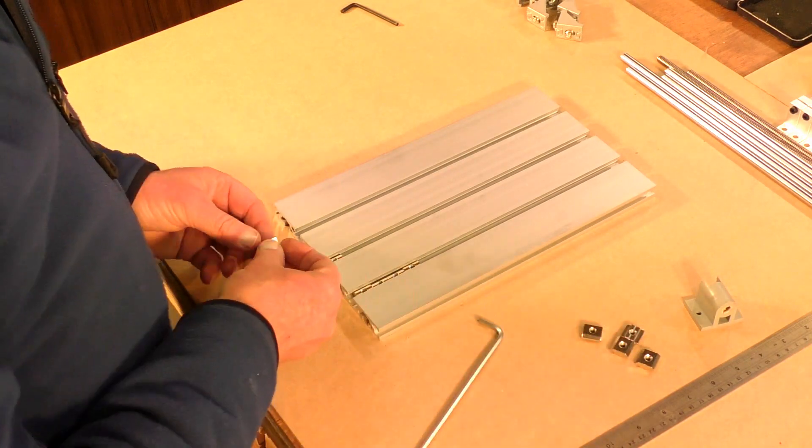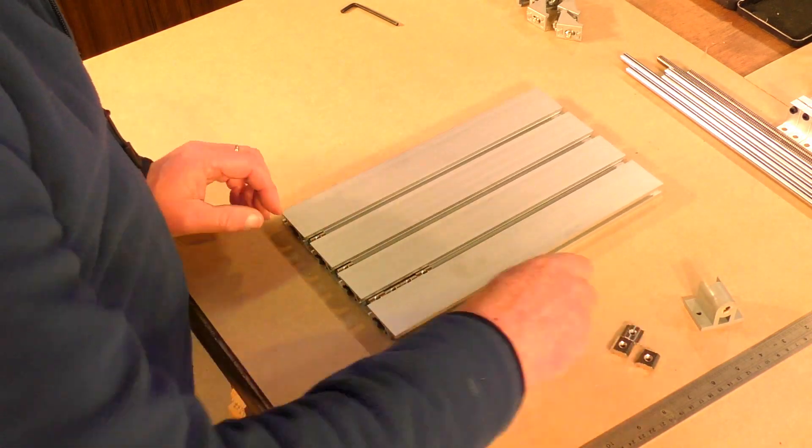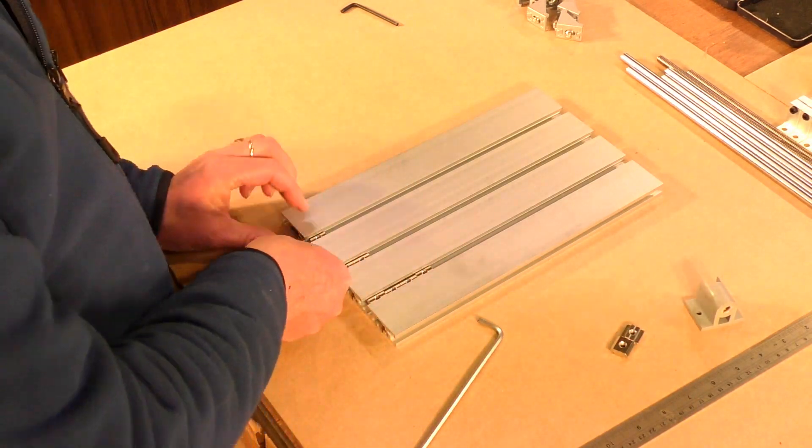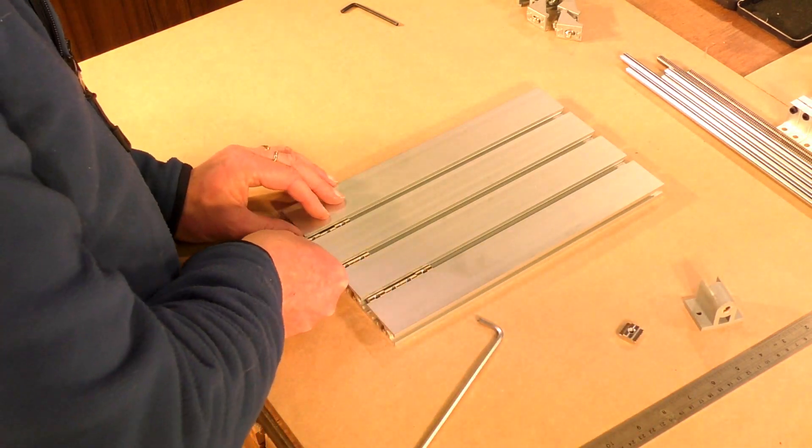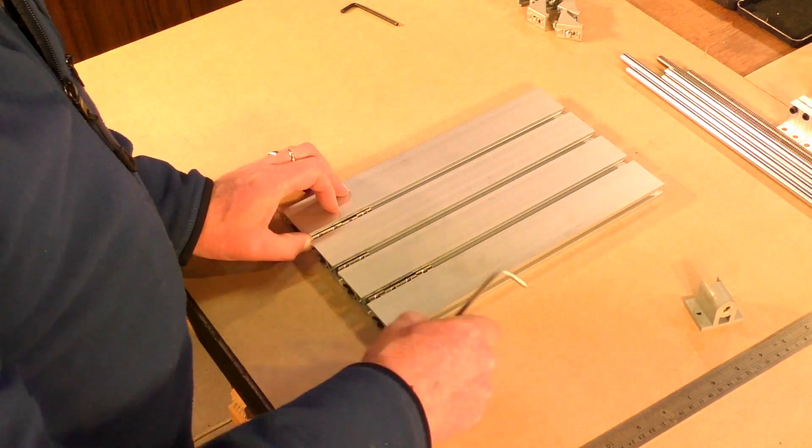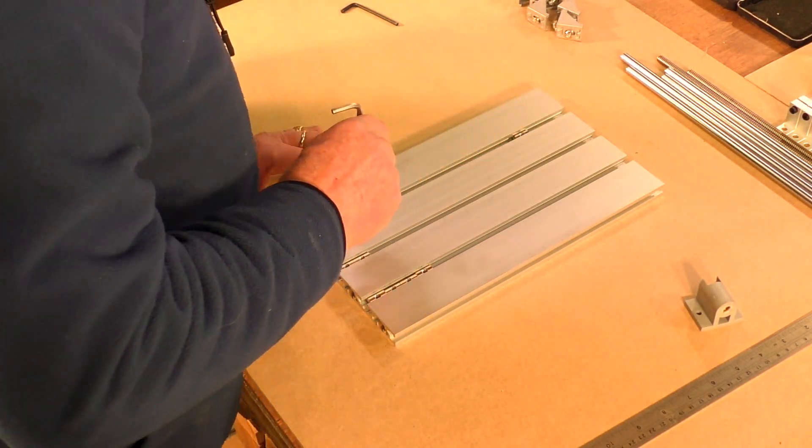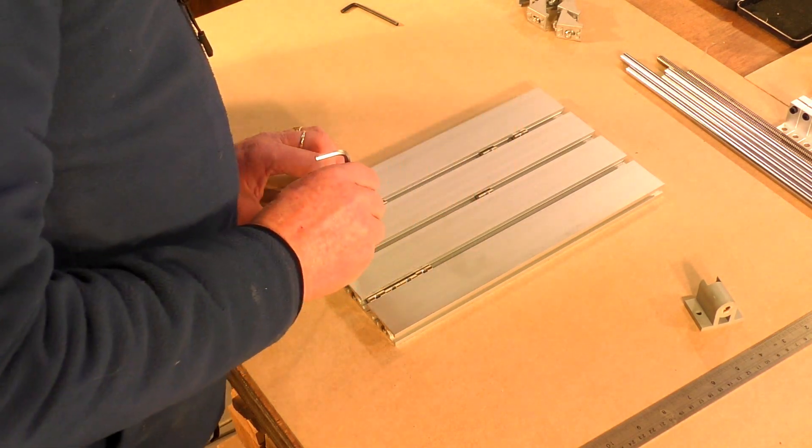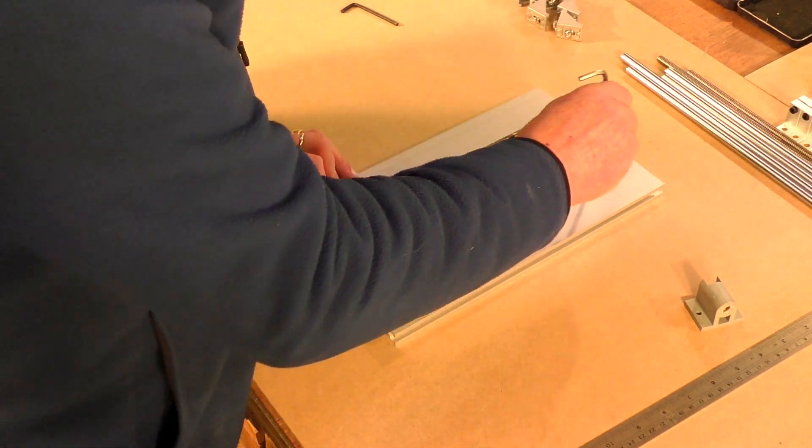So I put all the T-nuts in, and they will only really go up one way I think, and then spread them out to accommodate where the bearings and the main screw bearing block goes in the middle.